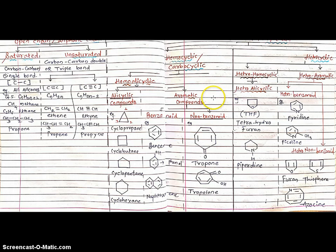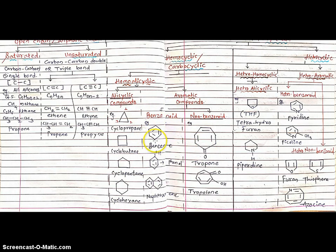Next type: aromatic compounds. The homocyclic organic compounds containing alternate single and double bonded rings, or benzene-like rings, are known as aromatic compounds. In case of aromatic compounds, there are two types: one is benzenoid and second is non-benzenoid. The organic compound containing a correct benzene ring is known as benzenoid, and the aromatic organic compound containing not a benzene ring but a benzene-like ring is known as non-benzenoid.